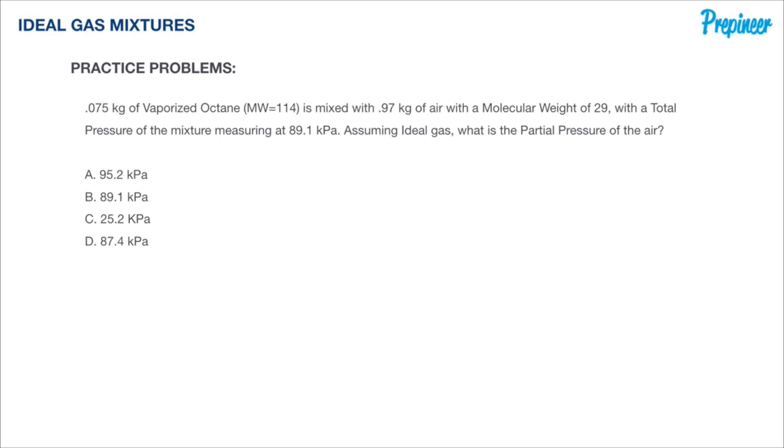Now recall that the formula to determine the partial pressure of any element within a mixture is P_i equals the mass of that component times the temperature in absolute as well as the volume.